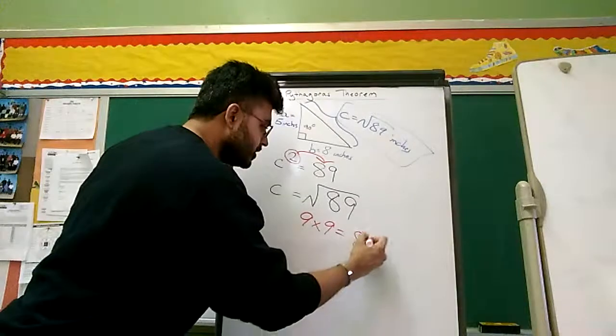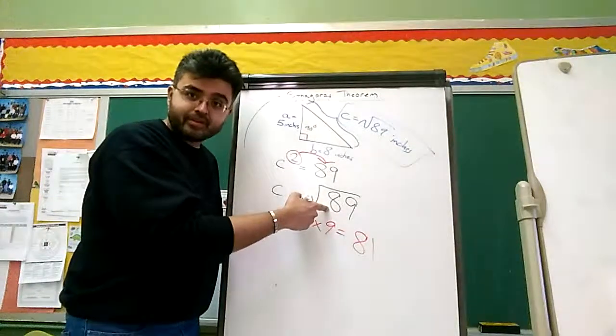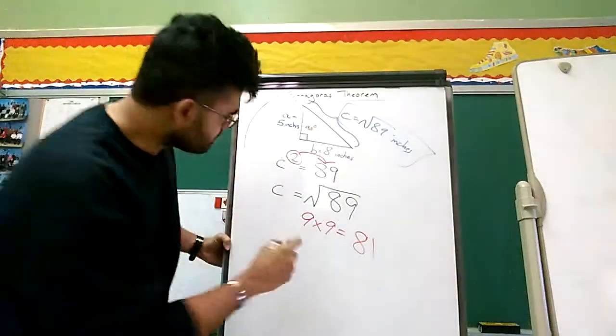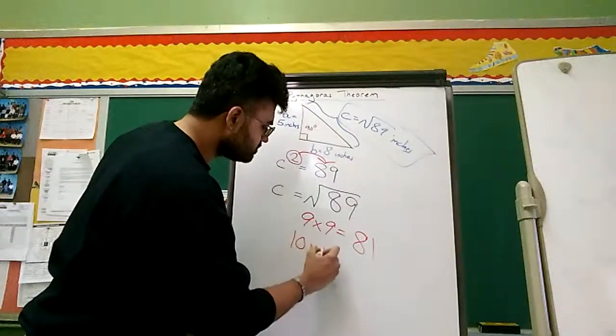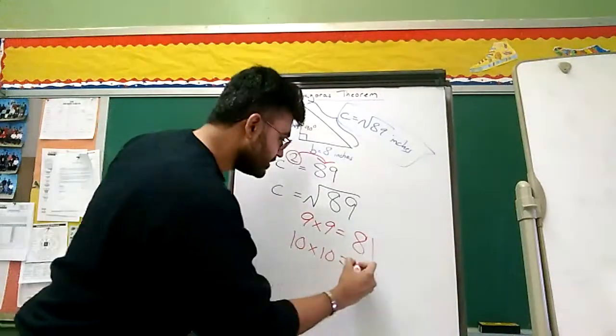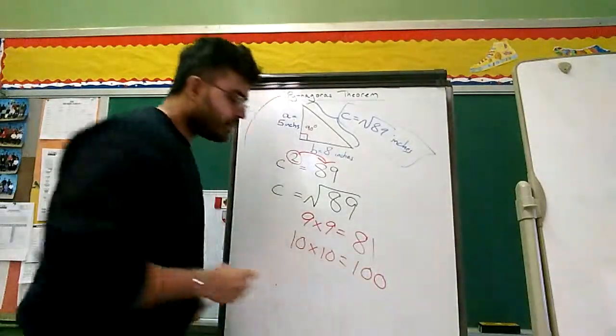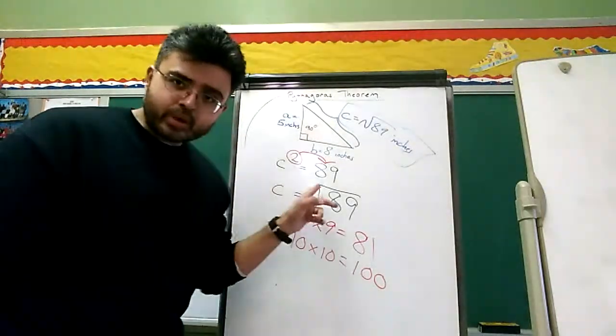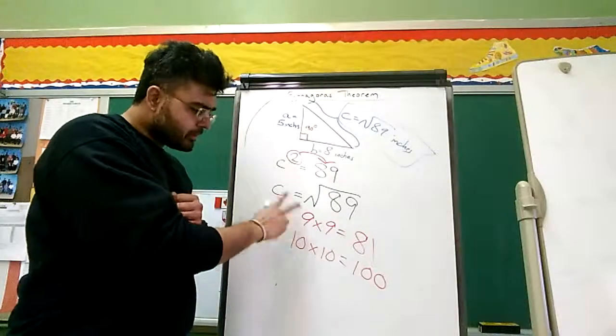We got two possible answers, guys. The square root of 89 is between these two numbers. Which number is close to 89?